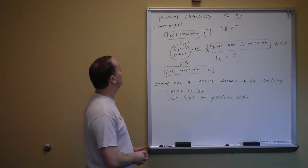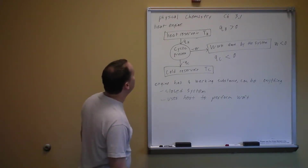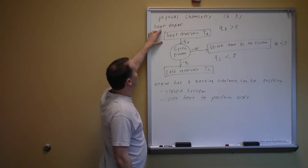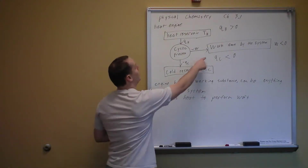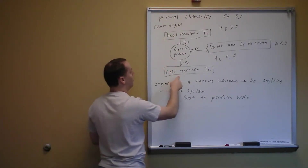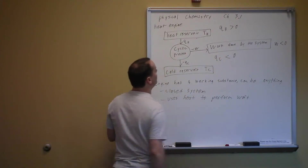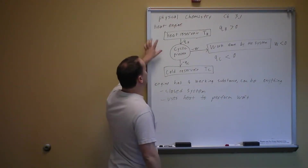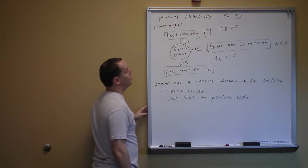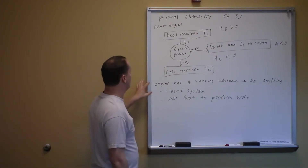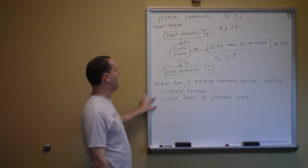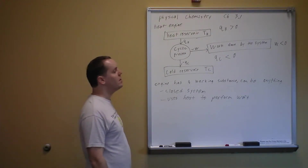A heat engine is a cyclic process that connects to a hot reservoir and a cold reservoir and does work. Heat QH comes in from the hot reservoir, heat QC goes out to the cold reservoir, and work comes out — that's the work done by the system. For a heat engine operating forward, QH is greater than zero, work is less than zero, and QC is less than zero. The system is closed, operating in a cycle, and the whole point is to use heat to perform work.